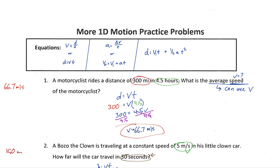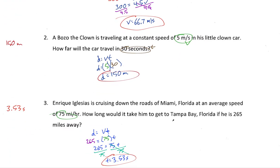Then I'm left with V equals some value in miles per hour, since it's a velocity in units of distance per time. Always have an answer in your head of what this should be around — 300 divided by five should be somewhere around 60, so 300 divided by four and a half should still be somewhere around 60-ish. It shouldn't be wildly different. And 66.7 is close enough to what I would estimate, so I know I didn't make any calculator errors. That estimation step is really, really key — not just to catch mistakes, but to develop a good number sense.